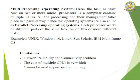Multi-processing operating system runs tasks on two or more microprocessors — that is, a computer contains multiple CPUs. All processing and management takes place in parallel, so these are also called parallel processing operating systems. Each processor works on different parts of the same task or on different tasks. Examples include Unix, Windows 10, Linux, Sun Solaris, and IBM Mainframe. Limitations include network reliability and connectivity problems, and the cost of multiple CPUs is very high, making it unsuitable for personal computing.